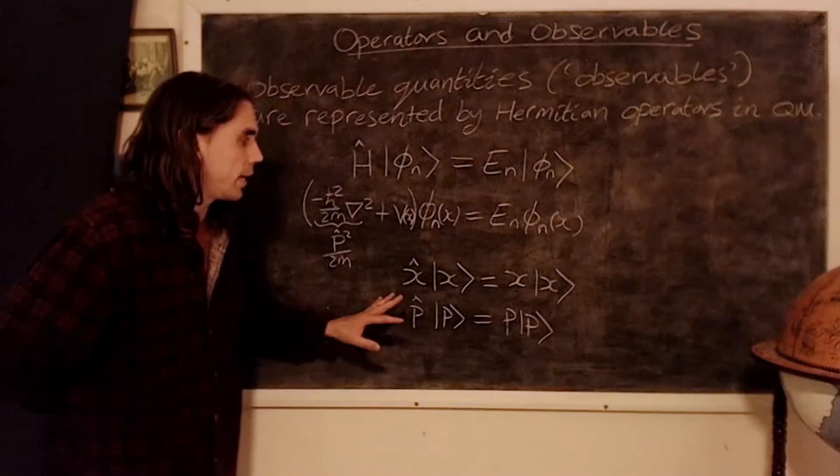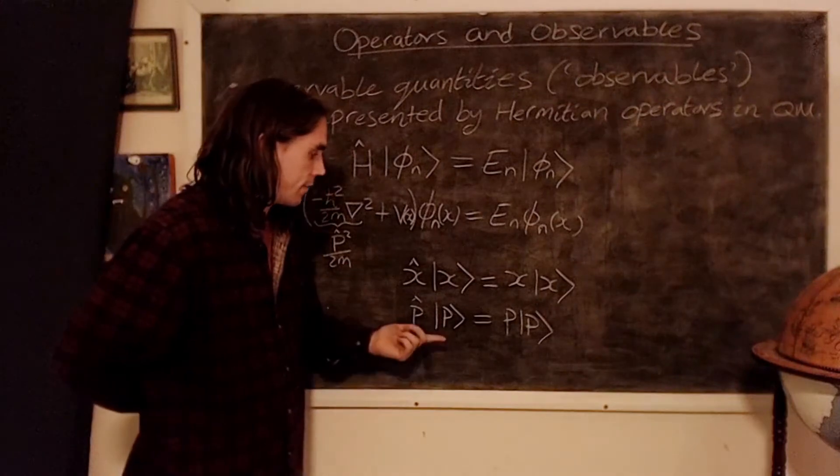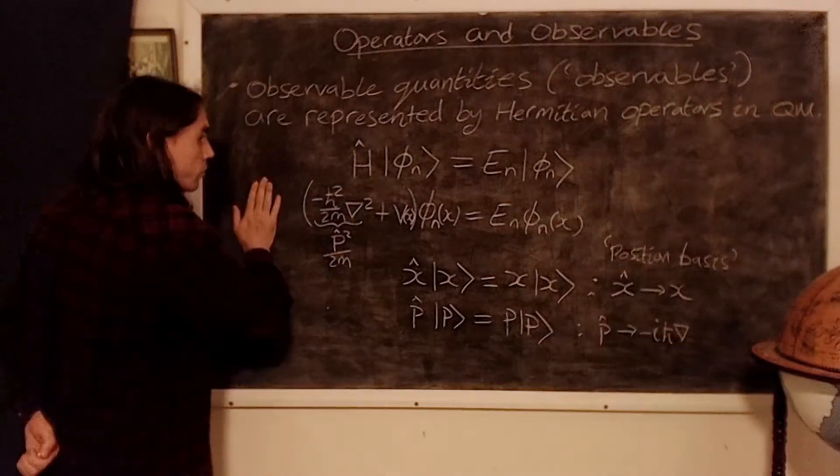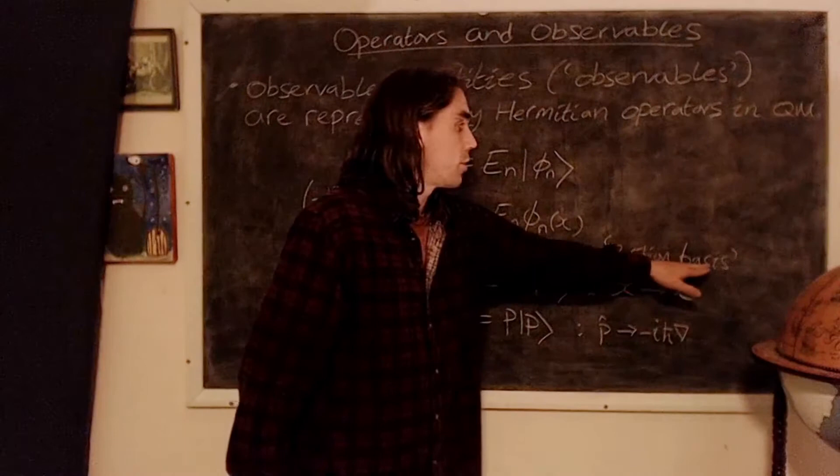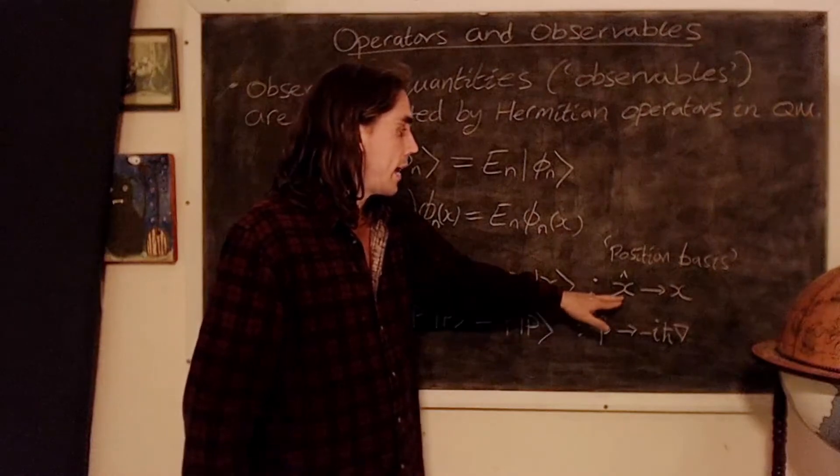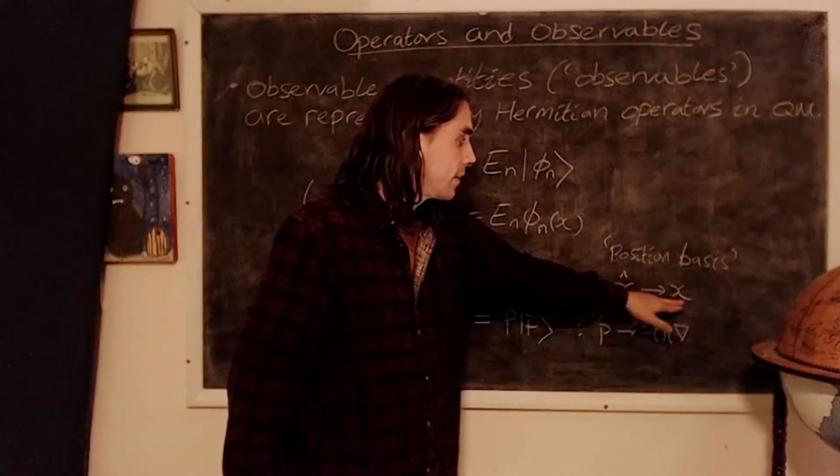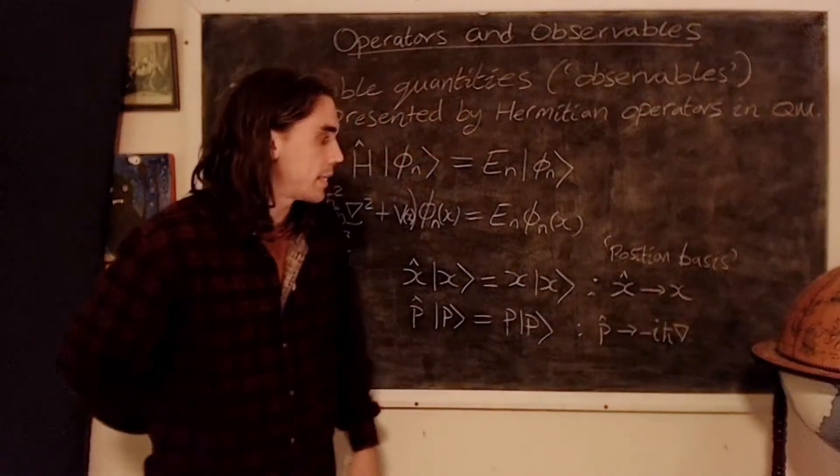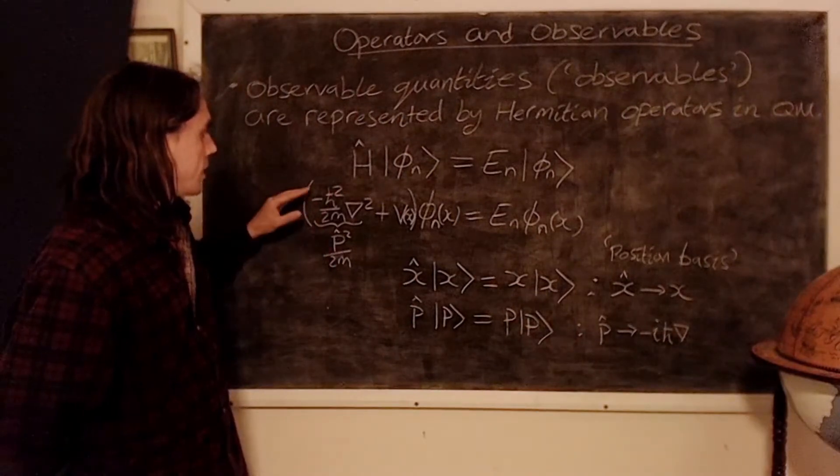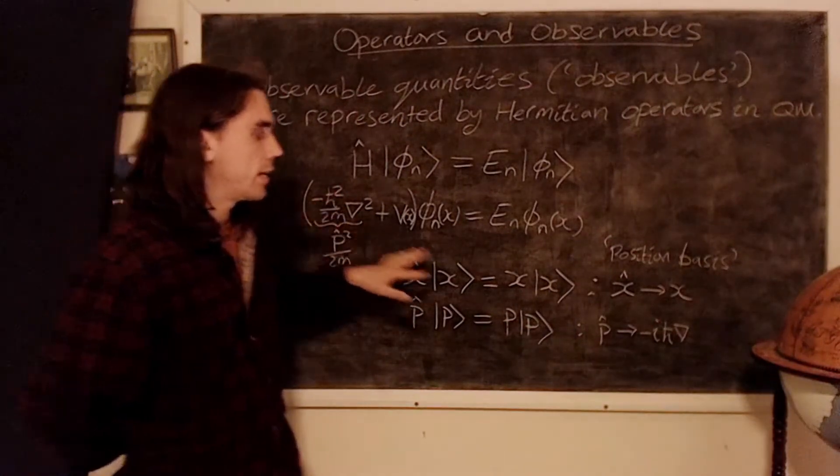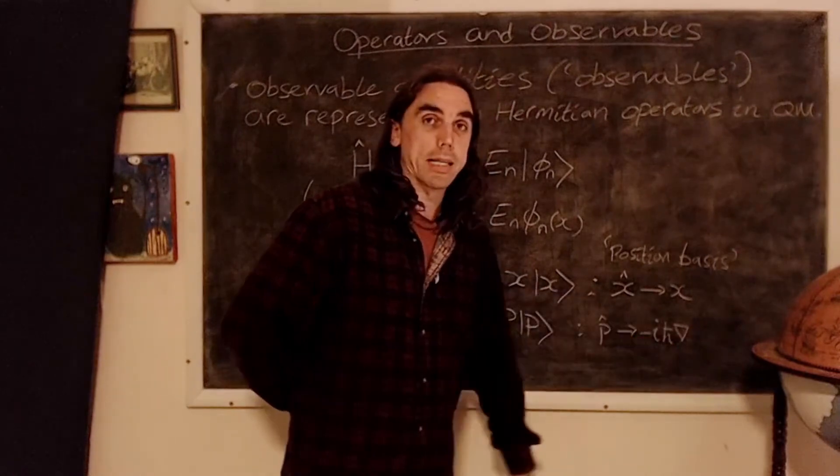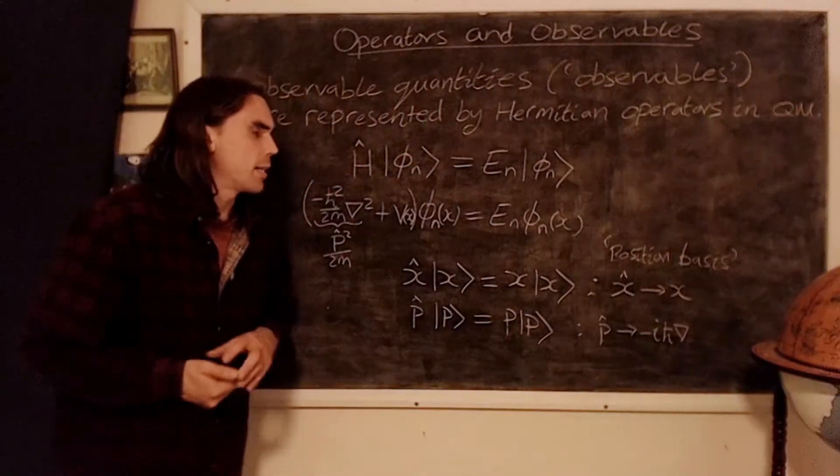So as we'll see in a later video, the position and momentum operators, when written in real space, are as follows. Okay, so working in what we call the position basis in quantum mechanics, writing things as functions of position, the position operator is simply x, the position in real space. And the momentum operator p, we can deduce from this that p squared over 2m is equal to minus h bar squared grad squared over 2m, that up to a sign, p operator has to be minus i h bar grad, or in one dimension, minus i h bar d by dx. So we'll take a look at what that really means in a couple of videos' time.